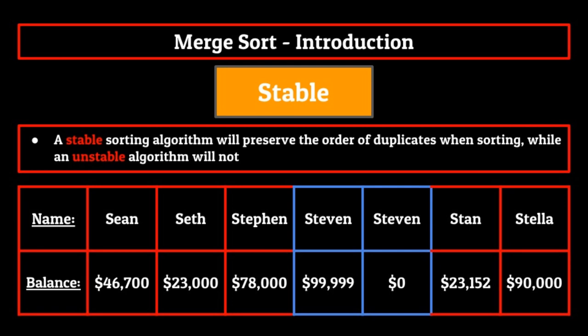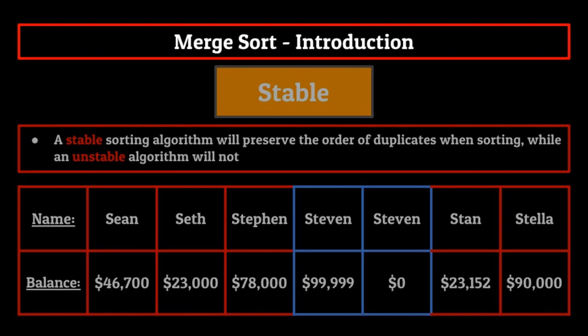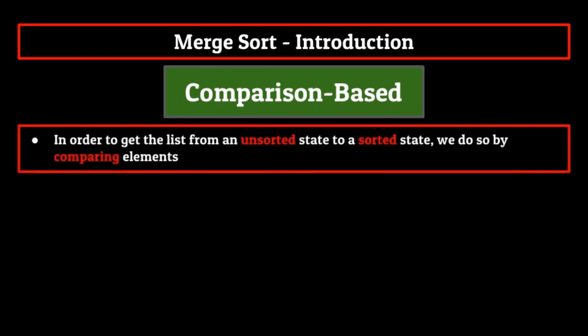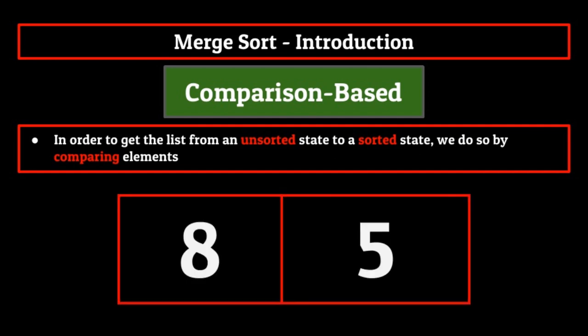If you want an in-depth explanation of stability in sorting algorithms, check out that portion of our selection sort video, which is linked in the top right corner as well as in the description below. Stating that the algorithm is comparison-based is nothing new to us. It simply means that in order to get the list from an unsorted state to a sorted state, we do so by comparing elements. To get the list in ascending order, we'll compare elements and place them in their correct spot, lower numbers to the left and higher numbers to the right.